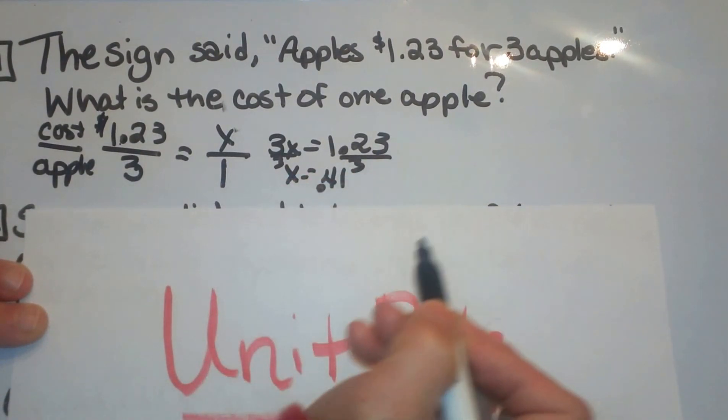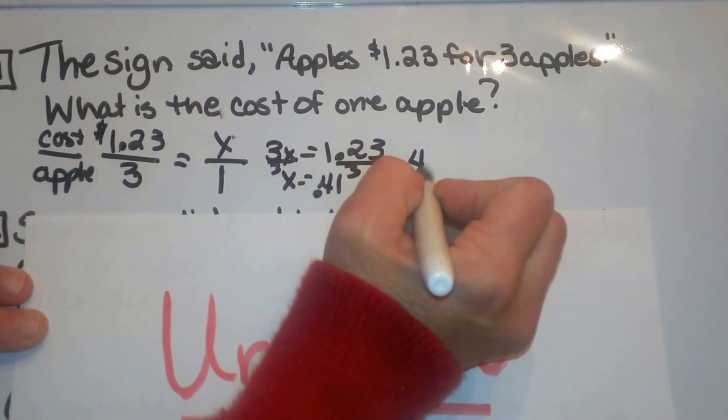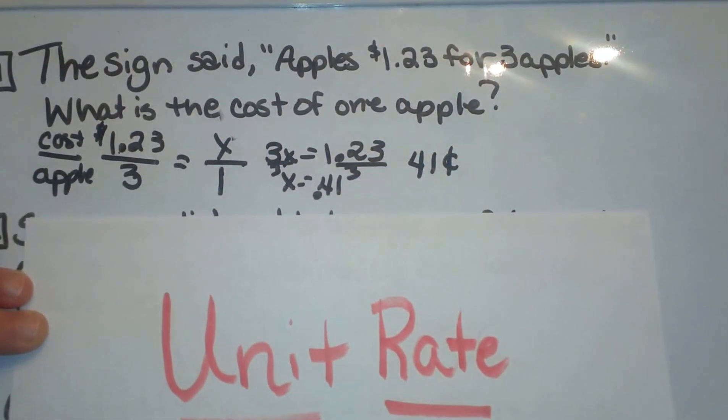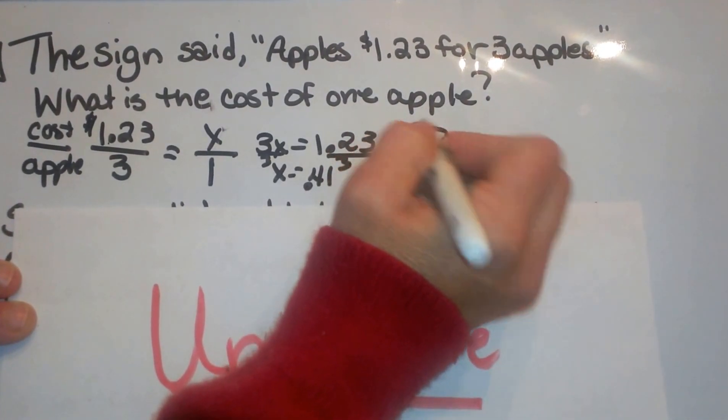But with the decimal it is going to be 0.41. So the cost is 41 cents. So that is how you do the first one. One apple would cost you 41 cents.